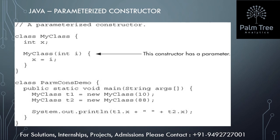the Java compiler will not create a default constructor. The purpose of a parameterized constructor is to initialize the instance variables of a class with specific values. This allows you to create objects with different initial states depending on the values passed to the constructor.